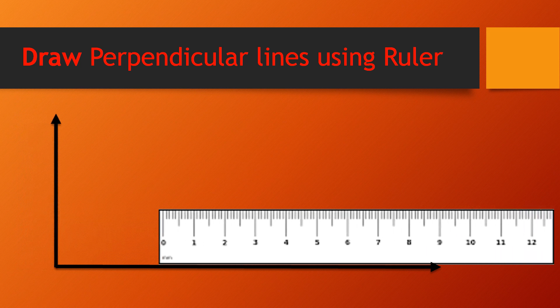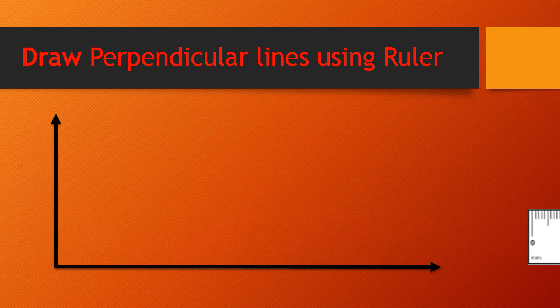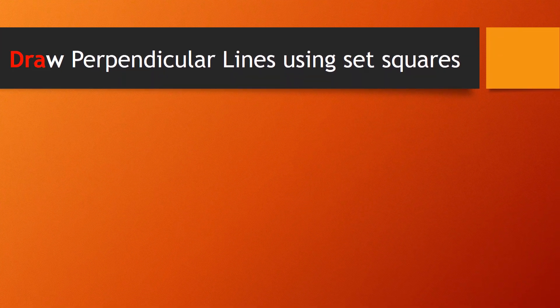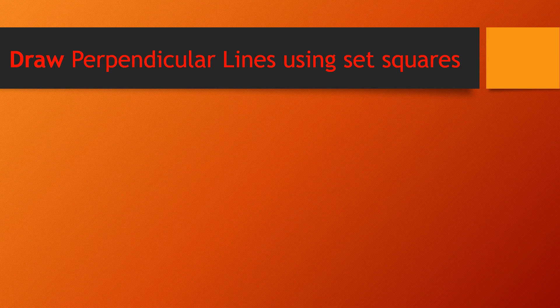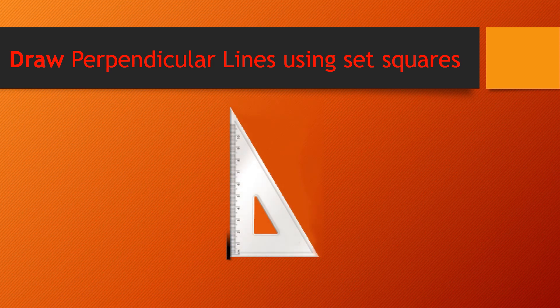There you go, you will have your perpendicular lines which have a right angle between them. You can draw perpendicular lines using set square and that's the easiest way of drawing perpendicular lines like this.